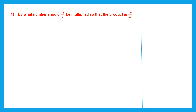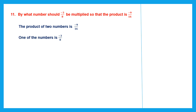Question 11. By what number should minus 3 by 8 be multiplied so that the product is minus 9 by 16? We have been given the product and we have been given one number; we have to find the other number. The product of two numbers is minus 9 by 16. One of the numbers is minus 3 by 8. Let the other number be x.